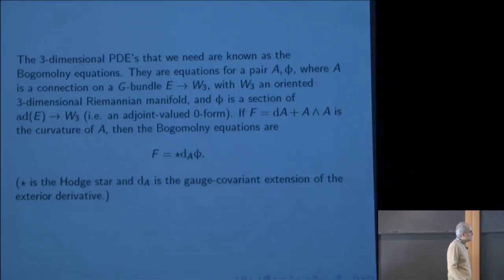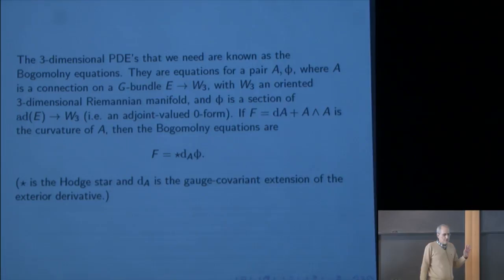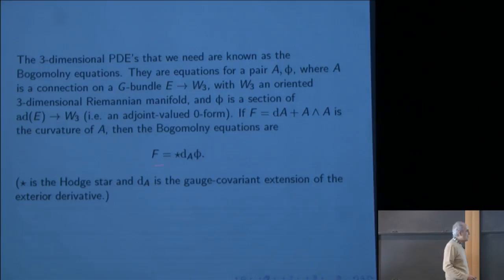They were studied by Bogomolny and other physicists starting in the 70s, and for example by Nahm, and later Atiyah, Hitchin, Kronheimer, and many other physicists and mathematicians. These equations have many remarkable properties, and we'll concentrate on one aspect. We'll consider the Bogomolny equations on a three-manifold that happens to be R × C, where C is a Riemann surface. In our application, C will just be the complex plane.